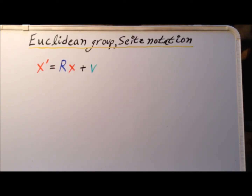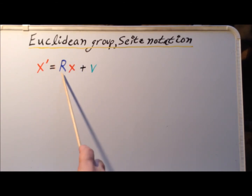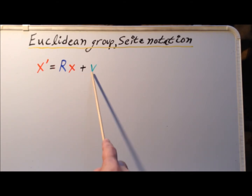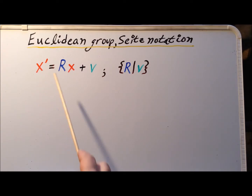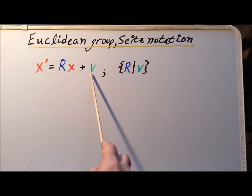The Euclidean group is the set of all transformations that take the point x to the point x prime, by first taking x and multiplying it by R, which is a 3×3 non-singular matrix, and then adding to it a vector v from V3. An important property of the Euclidean group is that each transformation maintains distances between two points. We can think of each of these transformations as a rotation by R and then a shift by v.